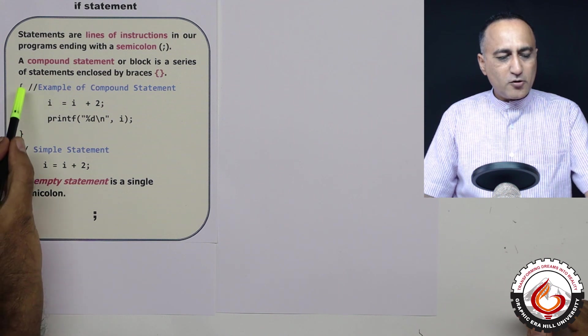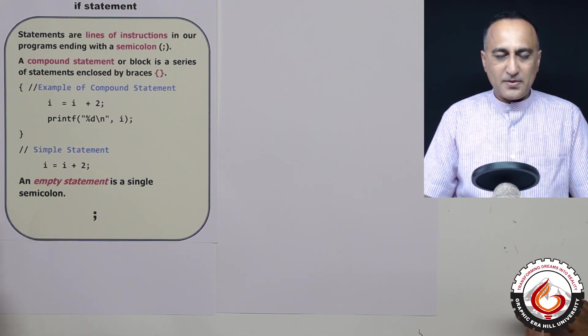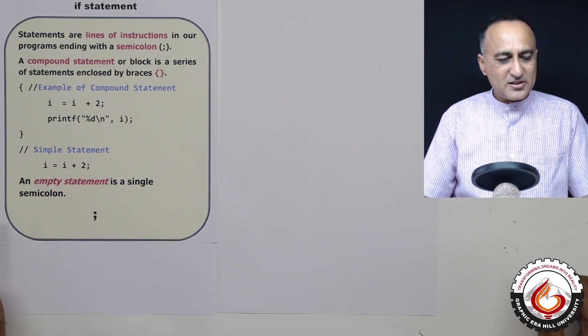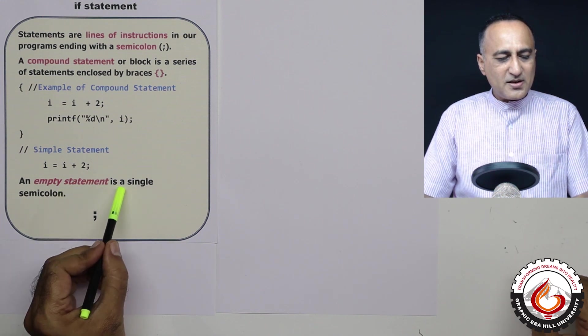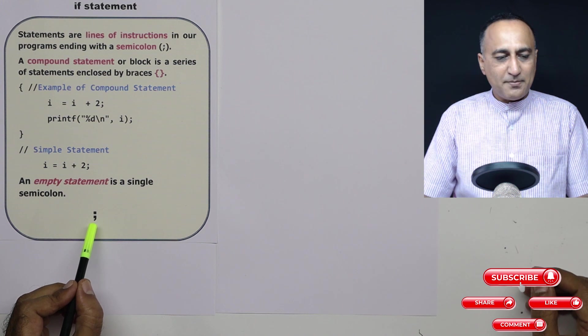If I ignore or do not put the block, this is an example of a simple statement. Then I can also have a null statement or an empty statement. An empty statement is simply a semicolon. So this is an example of an empty statement.